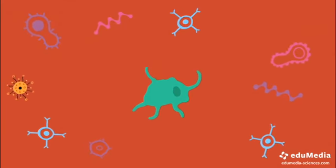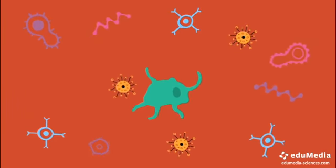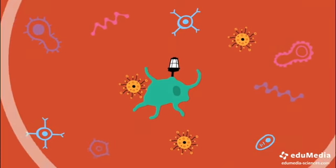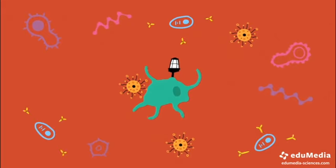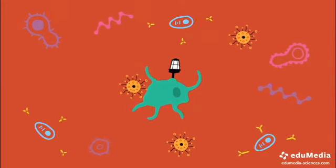Injecting an inactive portion of the virus, or the complete inactivated virus, stimulates sentinel cells and then B lymphocytes to produce pathogen-specific antibodies in large numbers. The body is thus prepared in case of infection.